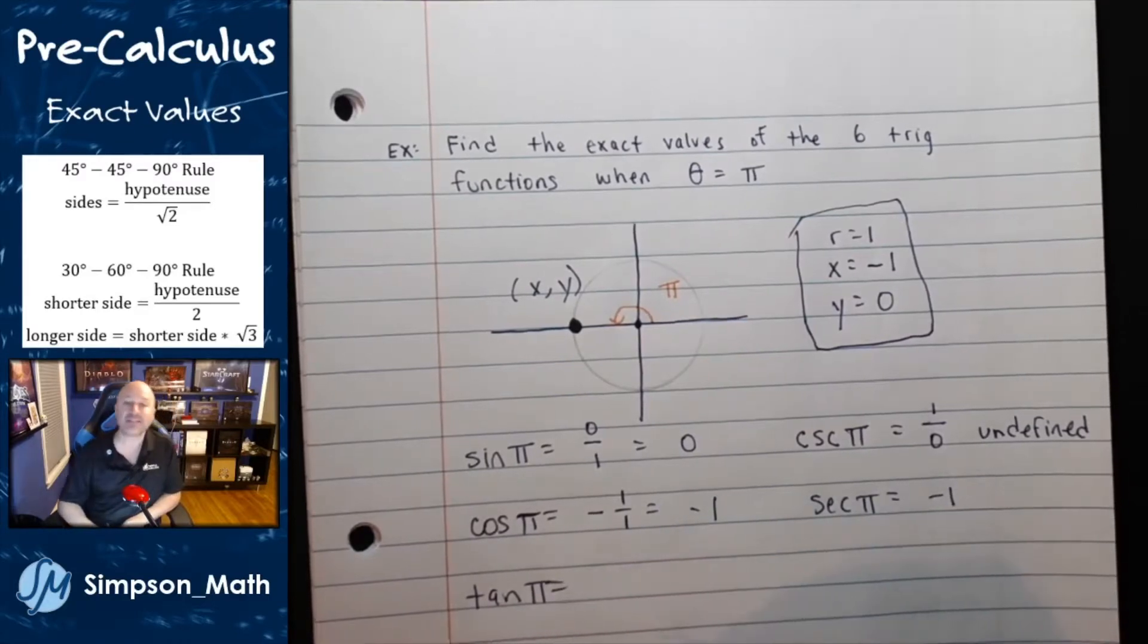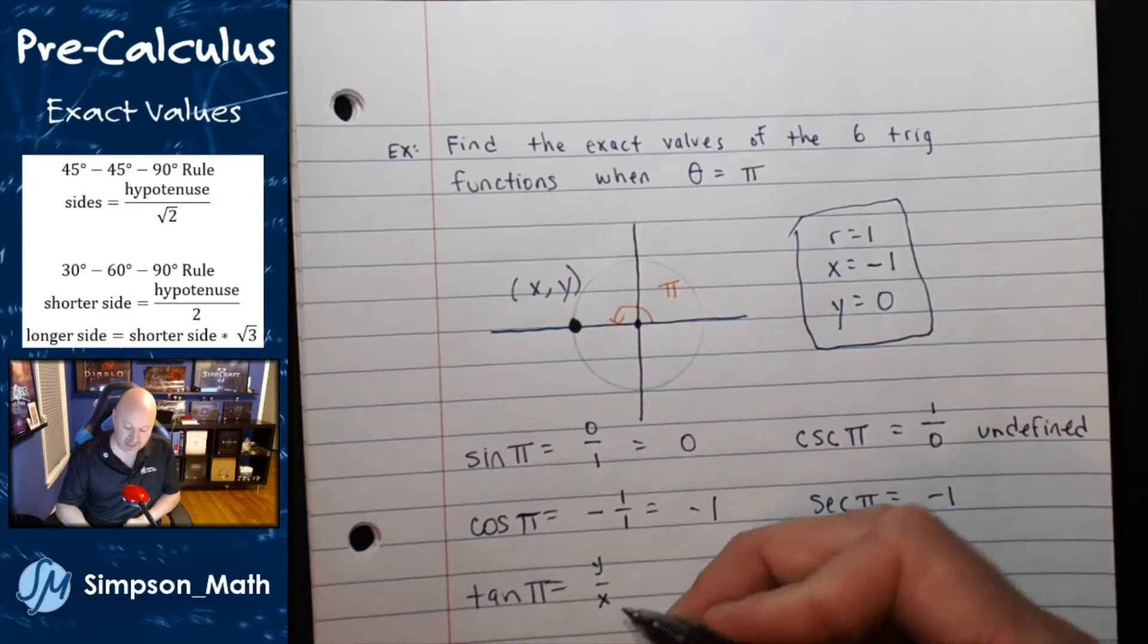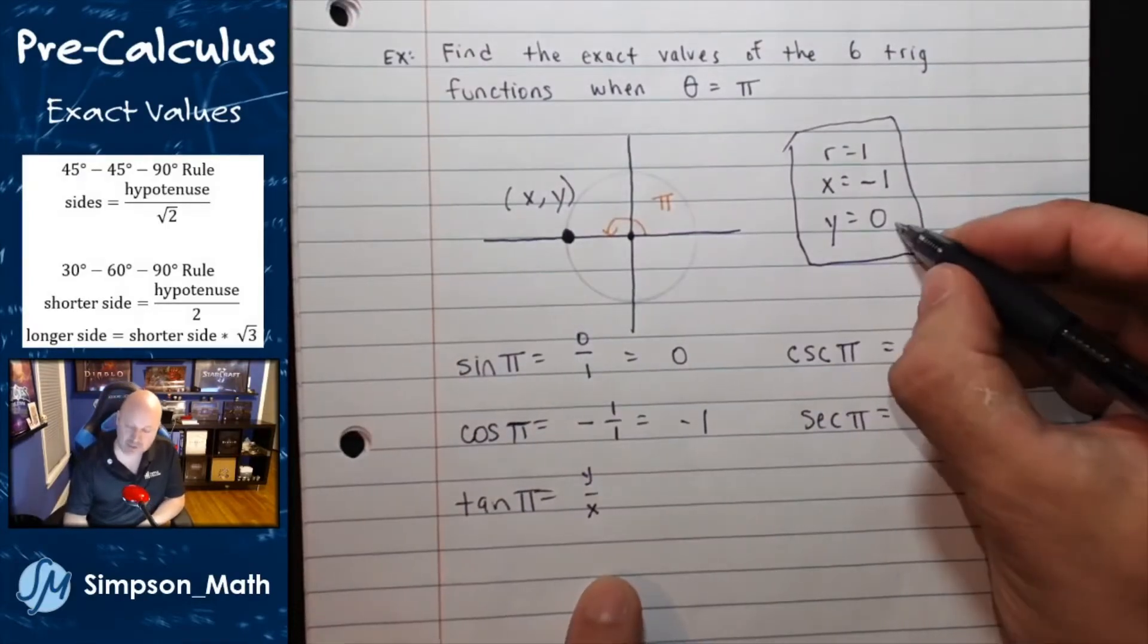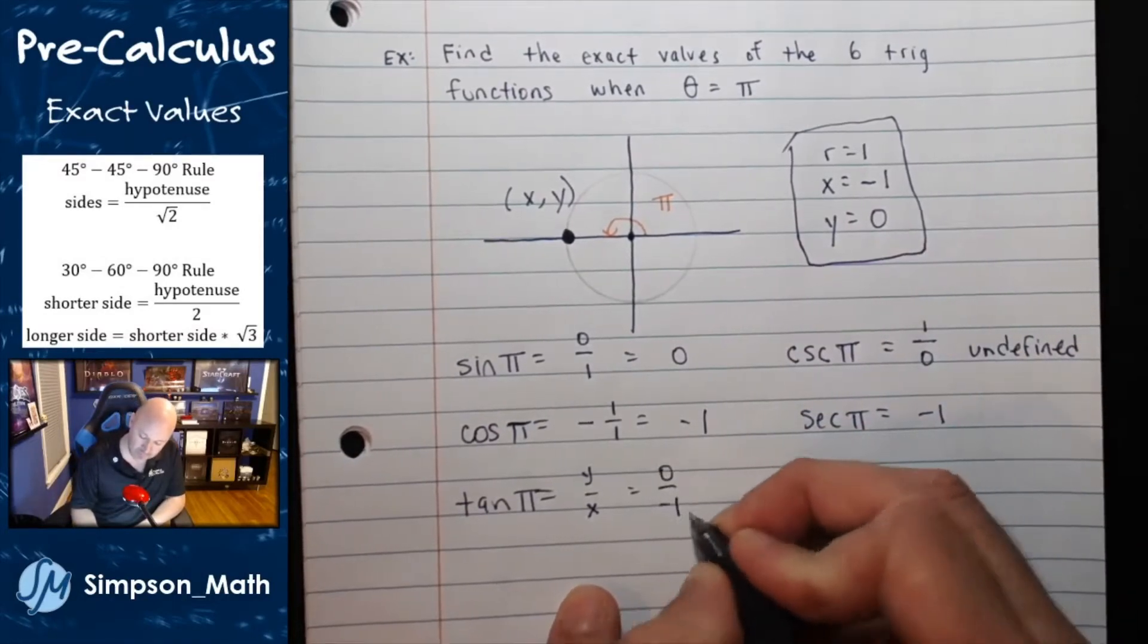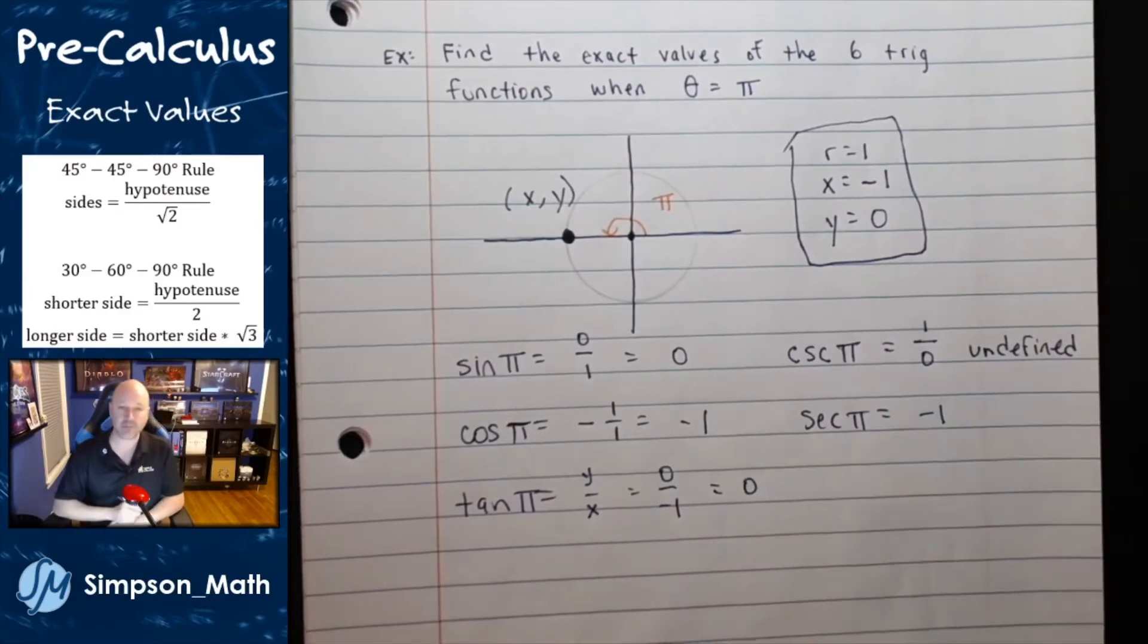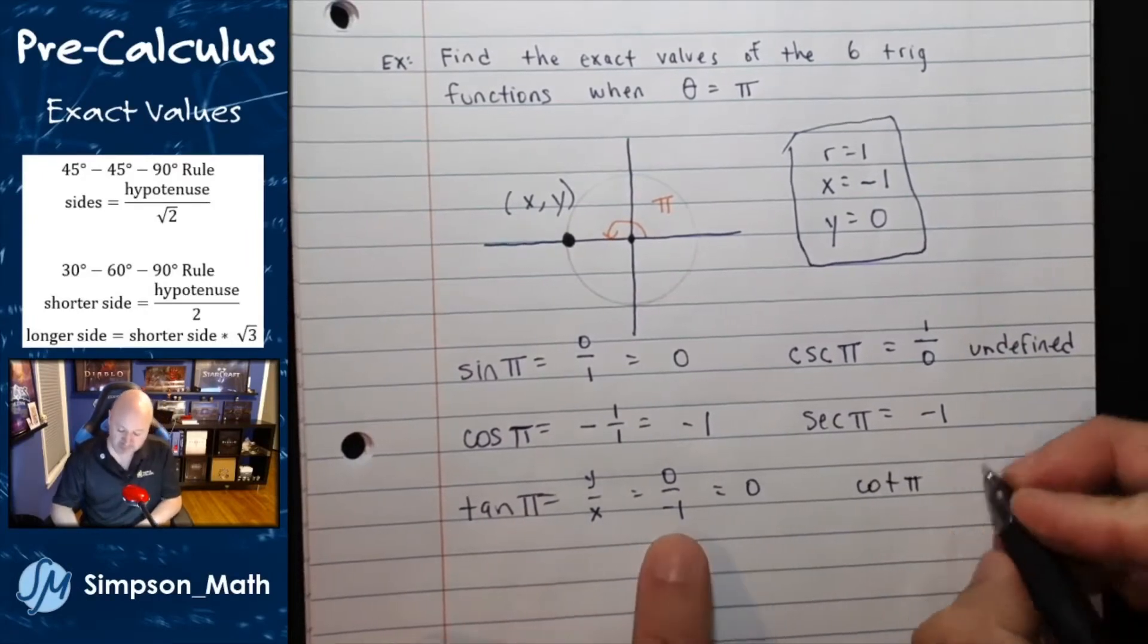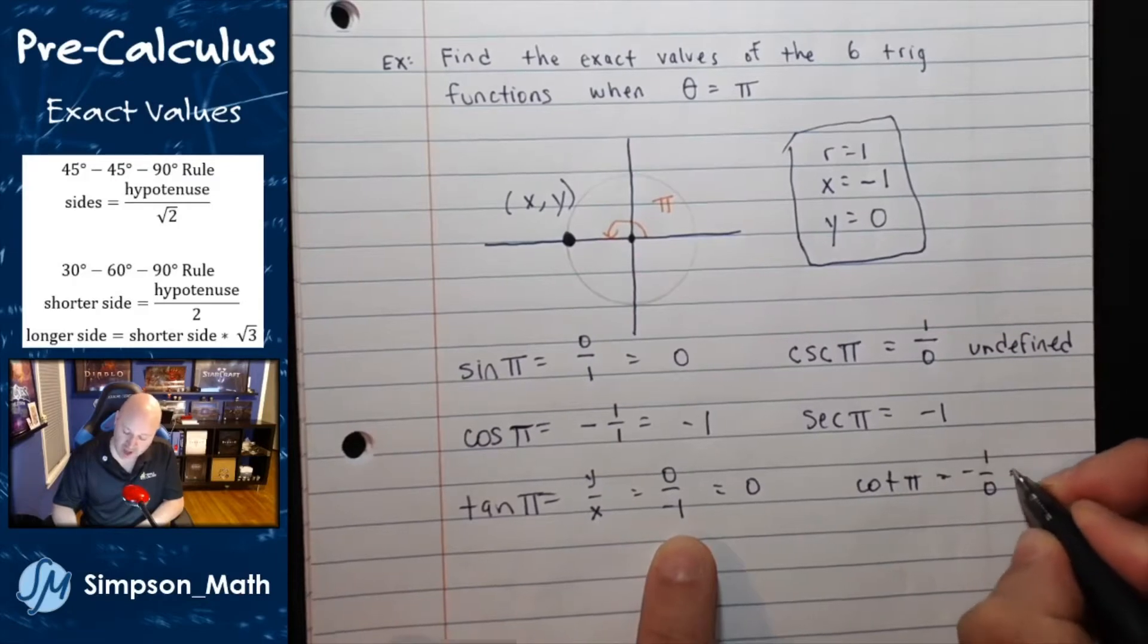Tangent of pi. Tangent of pi is defined as the y value over the x. Well, the y value is 0, and the x value is negative 1. I can do that. 0 divided by a number. Well, that's legit. That's 0. And cotangent, the reciprocal. That's a problem. That would give us negative 1 over 0, which is undefined.